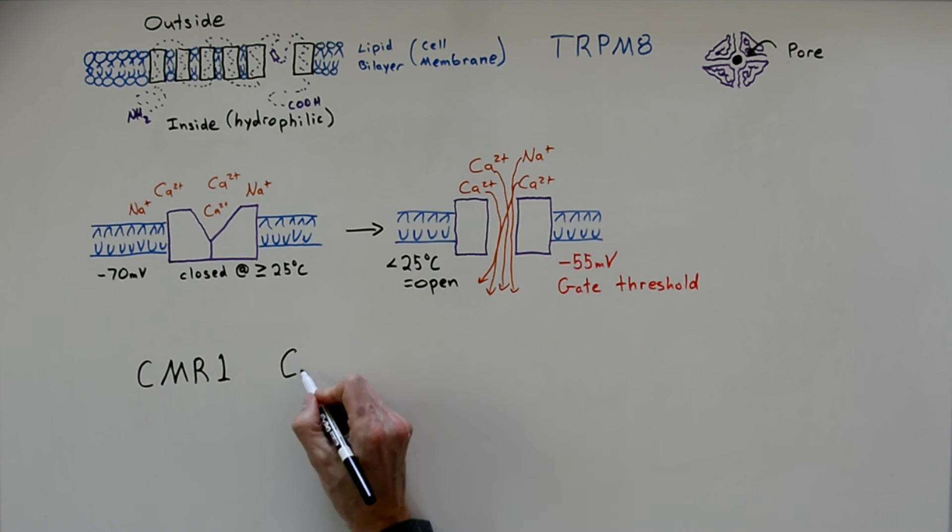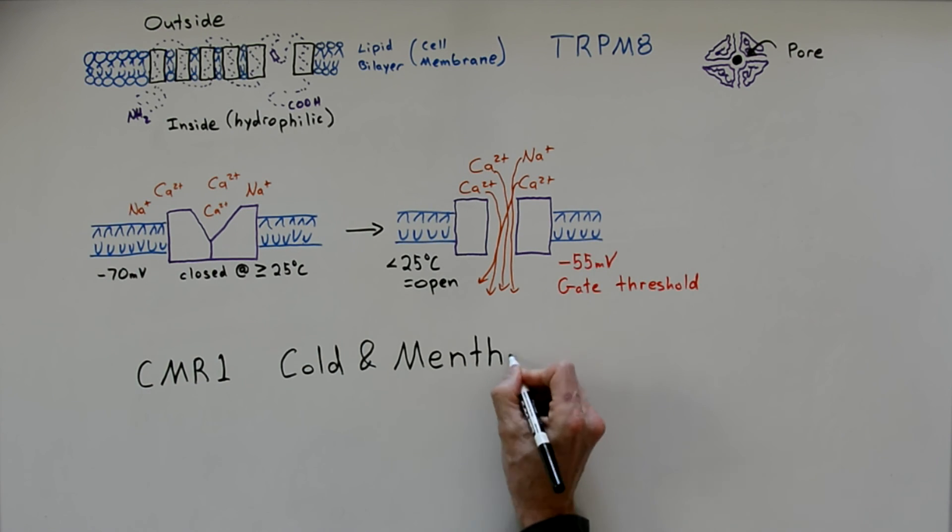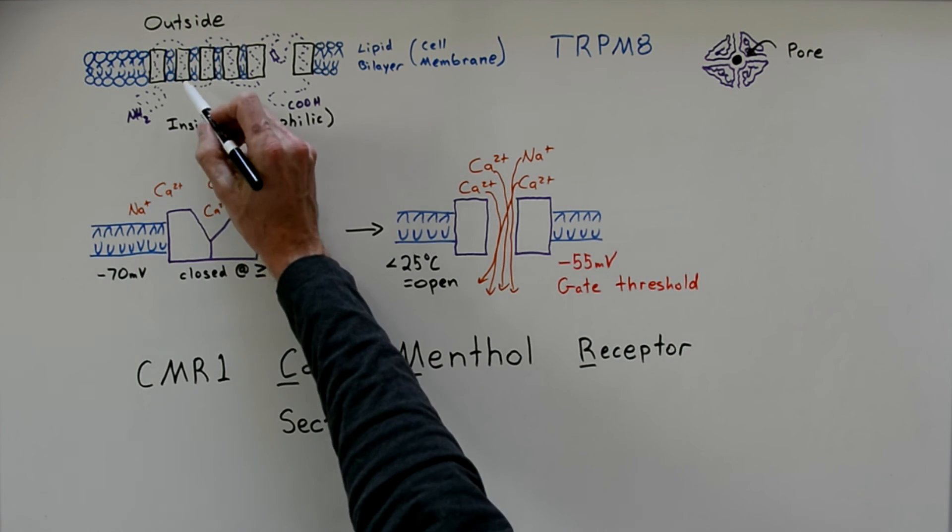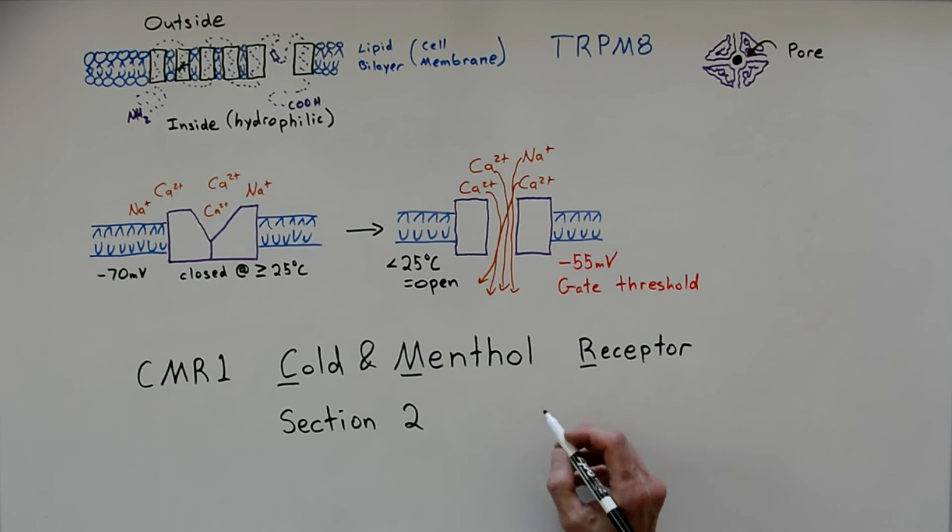Another name this channel is given is CMR1, a cold and menthol receptor. Section 2 of the transmembrane domain is responsible for a special function of this molecule. It reacts to menthol, eucalyptol, and another molecule called isolin in the same way that it reacts to cold.